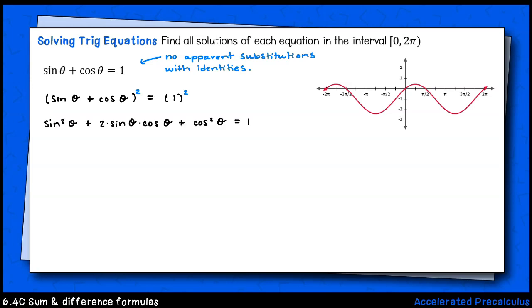When we square both sides, we need to take care to fully expand the left-hand side. Please make sure you don't distribute an exponent across addition here. Fully expanded, we have the trinomial sine squared theta plus two times sine theta times cosine theta plus cosine squared theta equals one.